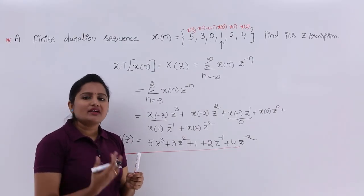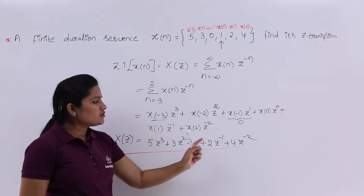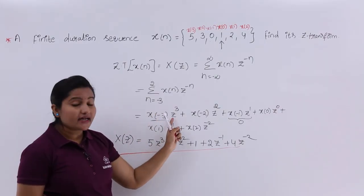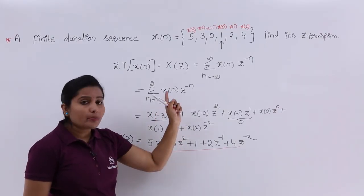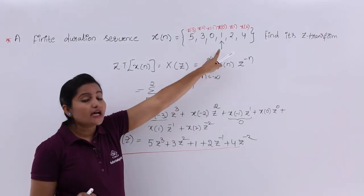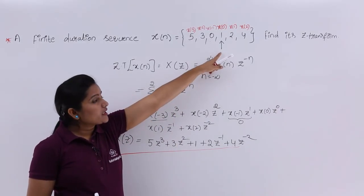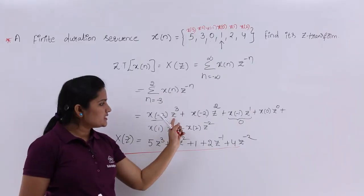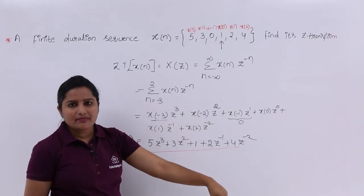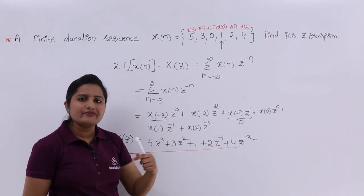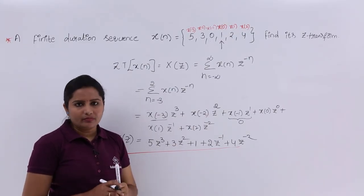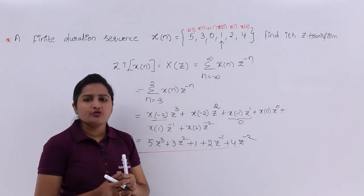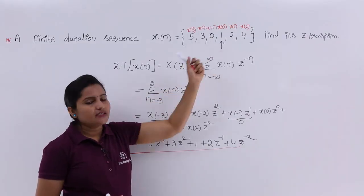For example, if the arrow mark is not given at all, you will not get any left-sided samples, meaning no Z power positive terms. Whenever an arrow mark is given in between the sequence, whatever samples are to the left of X of 0 will have Z power positive terms, and all right-sided samples will have Z power negative terms. So this is the Z-transform of the given finite duration sequence when X of 0 is located at the value 1.